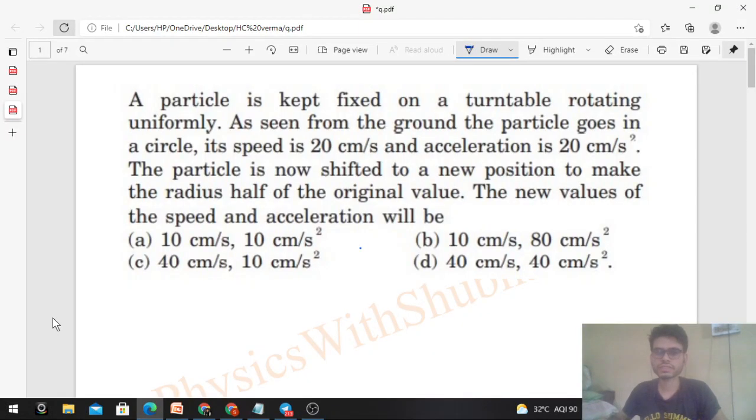Okay, hi everyone. So today let's discuss this problem from H.C. Verma. It says a particle is kept fixed on a turntable rotating uniformly. As seen from the ground, the particle goes in a circle. Its speed is 20 cm/s and acceleration is 20 cm/s². The particle is now shifted to a new position to make the radius half of the original value.